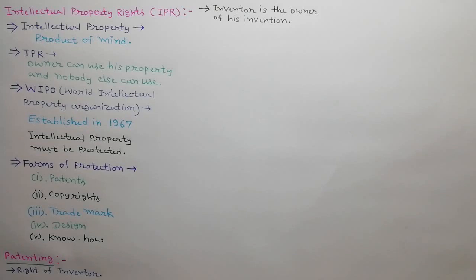According to this right, the inventor is the owner of his invention for a fixed period of time, 15 to 20 years. Any other person cannot copy, make, use or sell his invention.